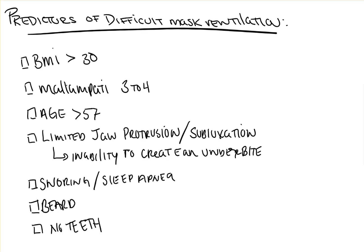Among all of these factors, BMI and beards are the only modifiable factors. It is recommended before patients go for surgery that they shave their beards if possible, or lose weight prior to surgery so as to decrease their BMI. That's all for predictors of difficult mask ventilation. If you have questions or concerns, please feel free to contact us, subscribe to the channel, or tune in for the next video.